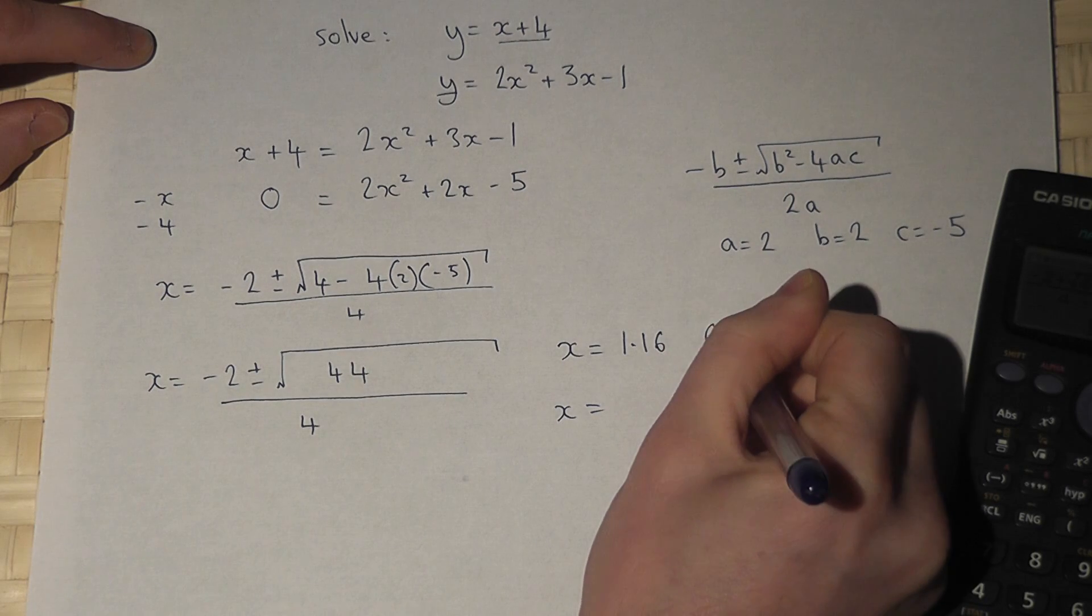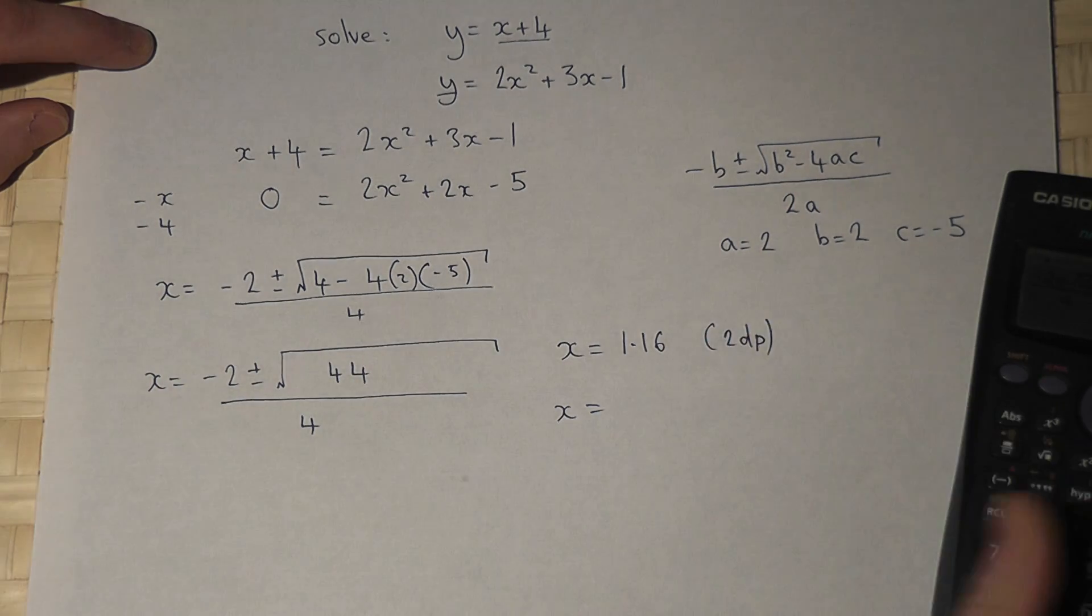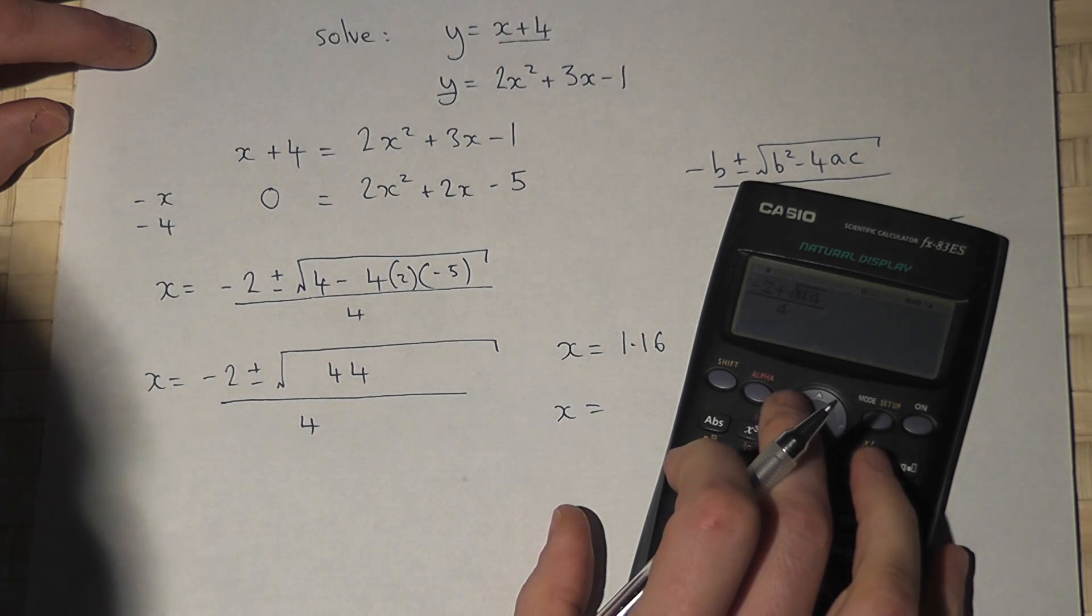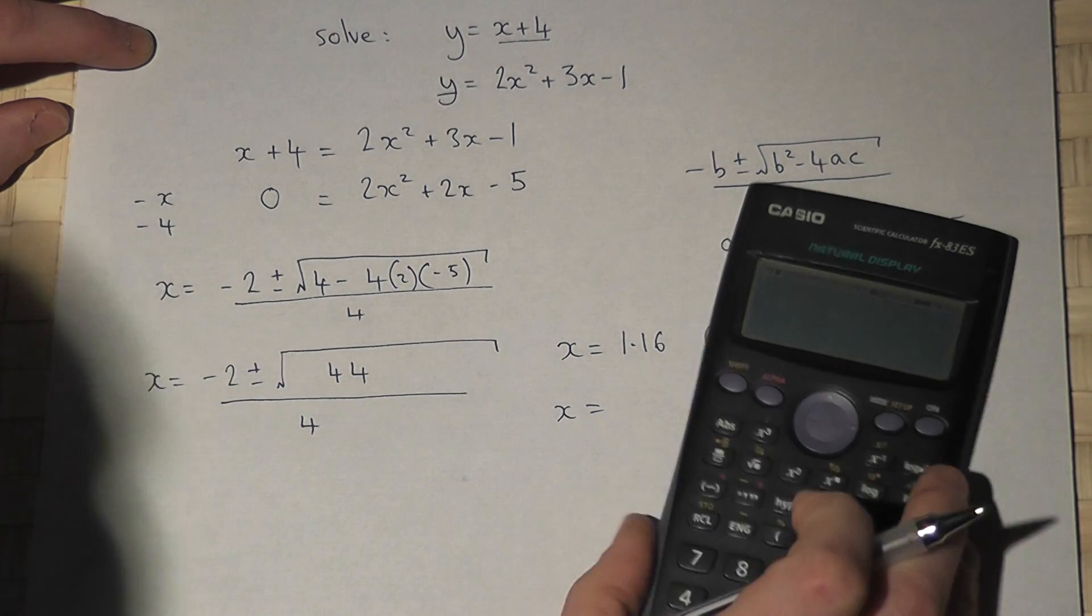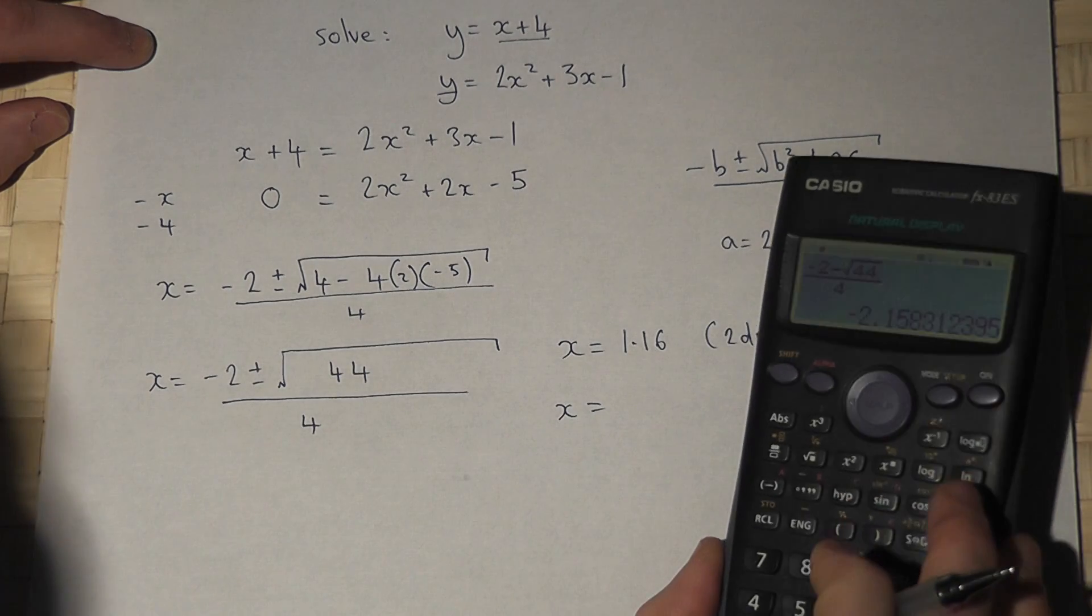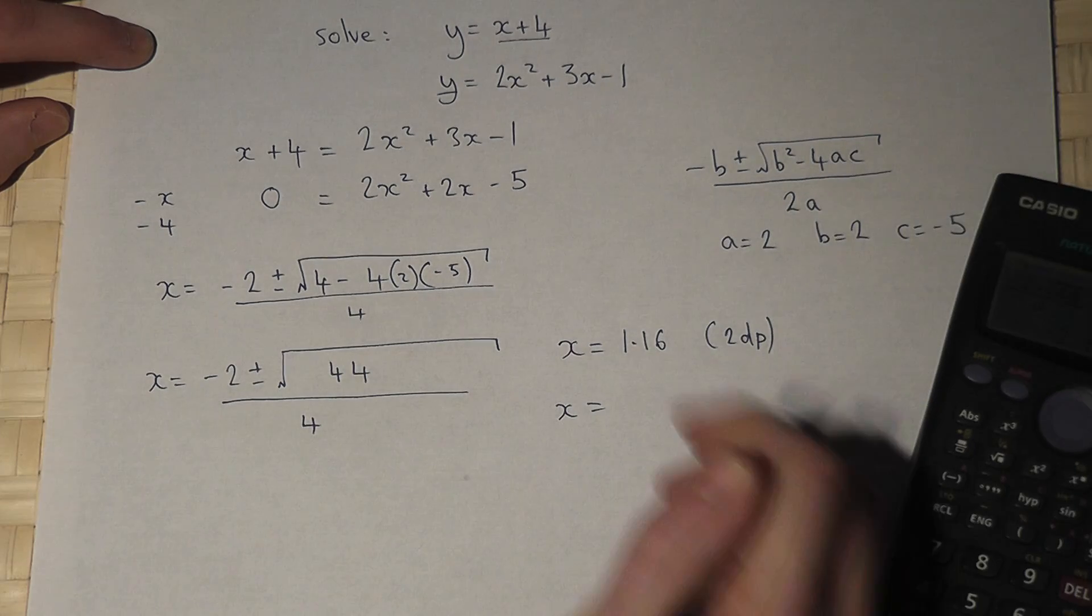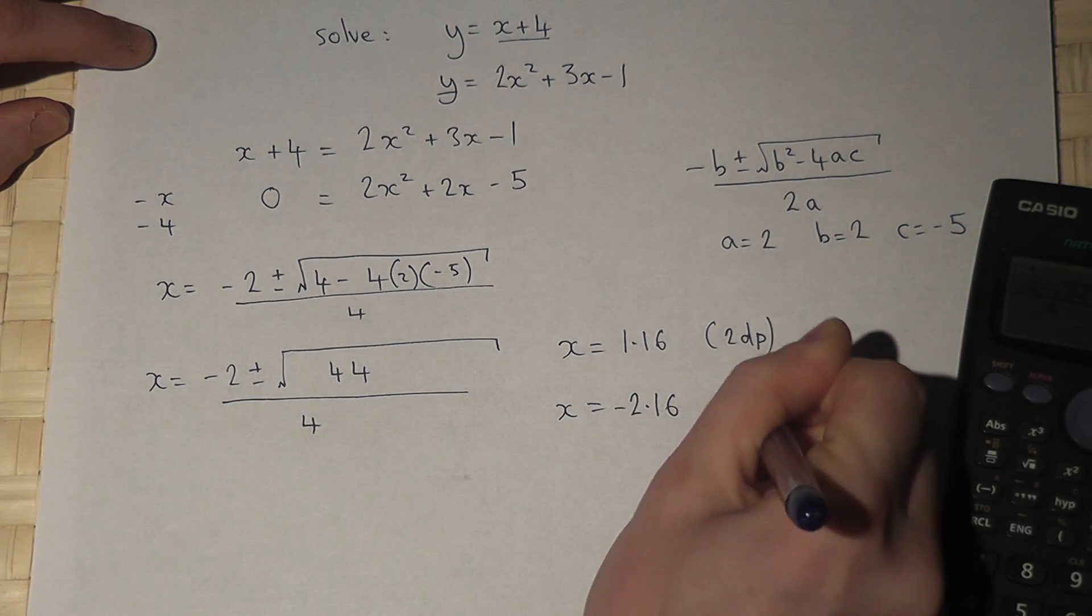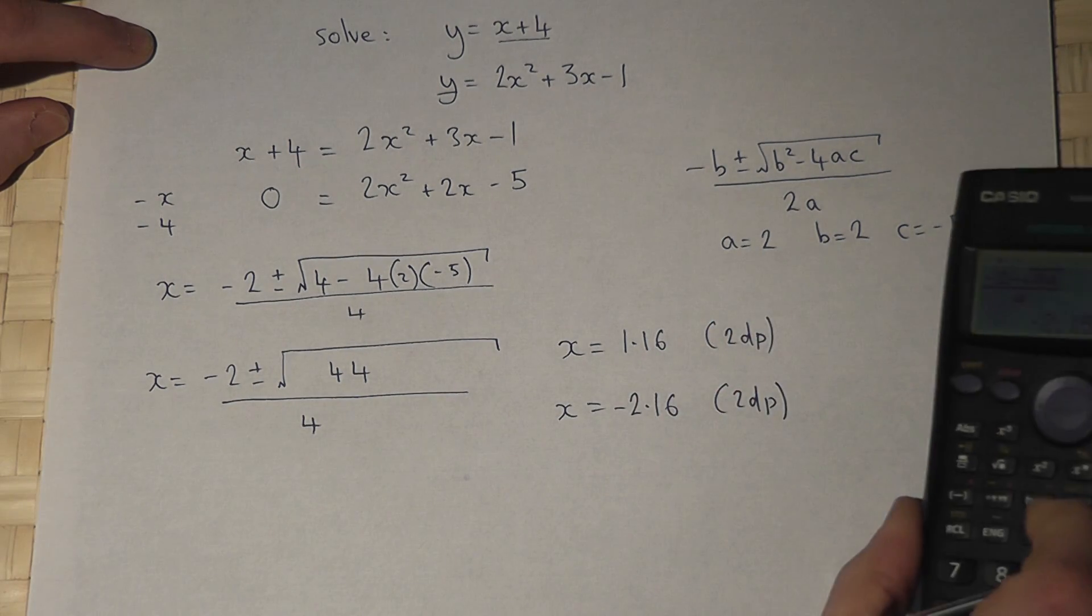So, 1.16 to 2 decimal places, or I can change it to a minus root 44, and I get the answer of minus 2.16 to 2 decimal places.